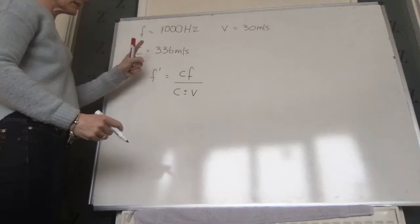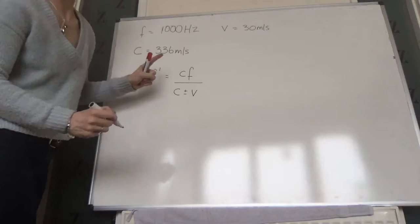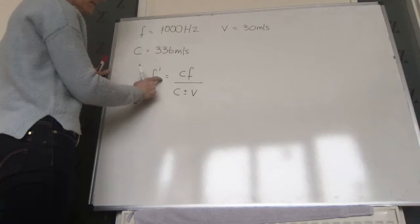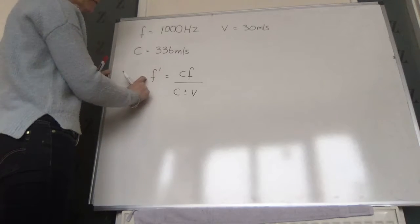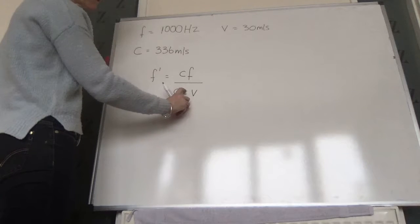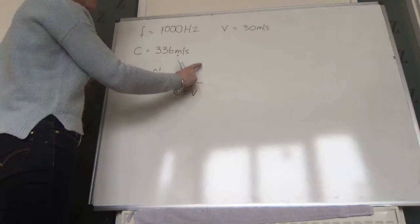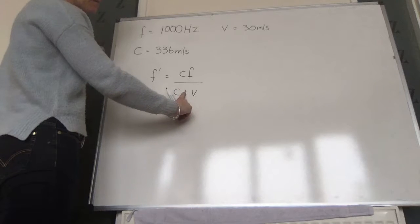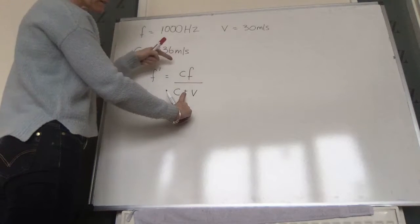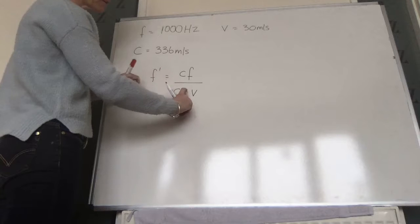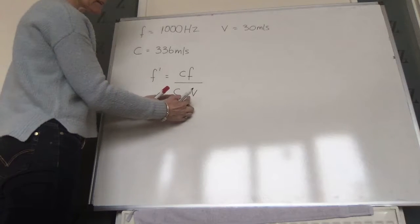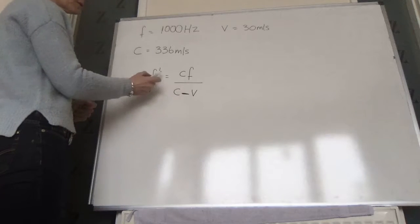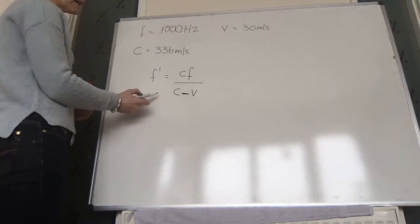If it is approaching the observer — that was the first case — we know we're going to experience a higher frequency. So we need whichever of plus or minus will make this number larger. If we make this a plus, the bottom will be big and the overall number smaller. If we make it a minus, the bottom is smaller, so we want the minus so that the overall frequency will be larger.